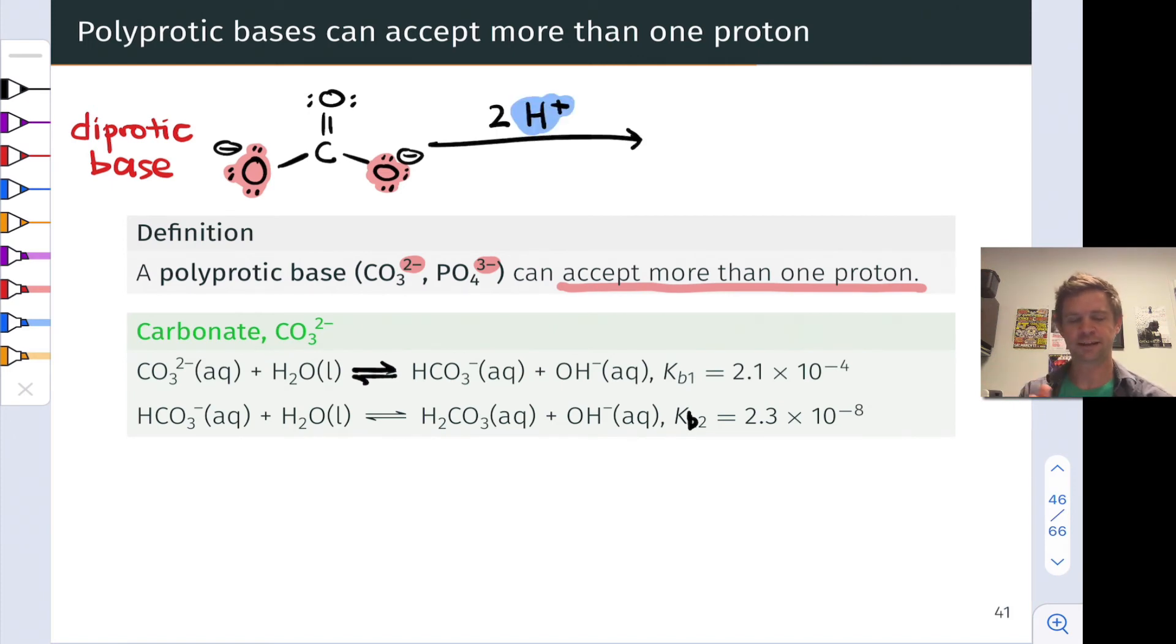Notice that when it does accept two protons, the structure we end up at is carbonic acid, H2CO3. And as we saw previously, this is a diprotic acid. It's got two protons with the capability of being lost.